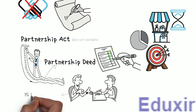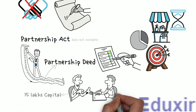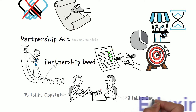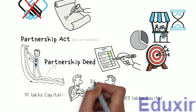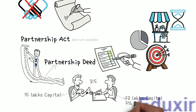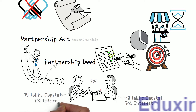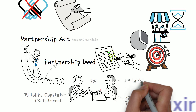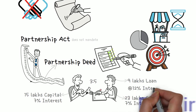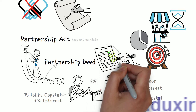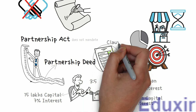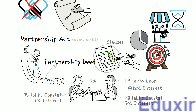One more detail that will be part of the partnership deed is how much capital is contributed by each partner — for example, Partner A contributed 15 lakh rupees, and Partner B contributed 23 lakh rupees. It should also have the ratio in which the partners should share the profits as well as losses, how much interest each partner would get on capital, and if any partner has given any loan, the details of how much interest is paid on the loan. These details are called clauses.